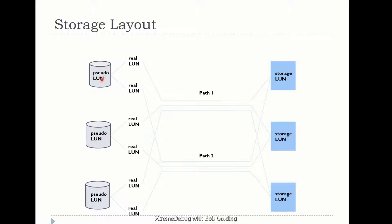As an example, we have a pseudo LUN, which is a representation of all paths in MPIO, and we have two real devices generated due to the enumeration of the SCSI bus. Because of the way store port works, there will be two devices enumerated that represent a path to each device. You can see path one going to the storage unit and path two going to the same unit. When enumeration is done, this is going to look like two different devices because two paths are picked up. Because of MPIO, only one device will be presented to the system instead of multiples — in this example, six devices are reduced to three.